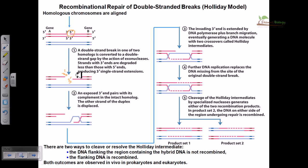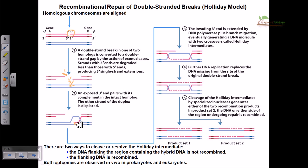An exposed three prime end pairs with its complement in the intact homolog, and the other strand of the duplex is displaced. This three prime strand is placed in this direction. For this process of strand invasion, this DNA must access the RecA protein, because RecA will bind with the single-stranded overhang and guide it to the other homologous region of the DNA, pairing with homology to the other strand.